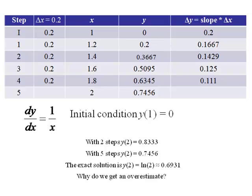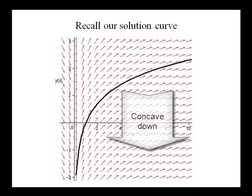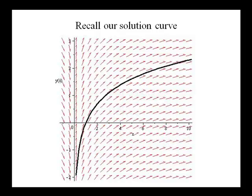Why do we get an overestimate? Well, let's see why we get an overestimate. Recall our solution curve. Notice that it's concave down. The way Euler's method works is essentially we're using tangent lines at each of these points. So if we have a graph that's concave down, our tangent lines are always going to lie above the solution curve, and we'll get an overestimate. If we have a curve that's concave up, our tangent lines are always going to lie below the curve, and thus we'll get an underestimate.